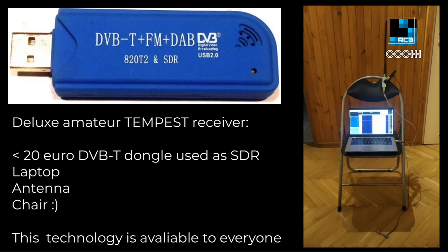We'll be using this receiver — it's just a dongle used to receive television, but it can be repurposed as a software-defined receiver able to receive from 24 MHz to 1.7 GHz. It costs less than 20 euros, so it's really technology available to everyone. On the right you see my Tempest receiver, which was used in some of this work.